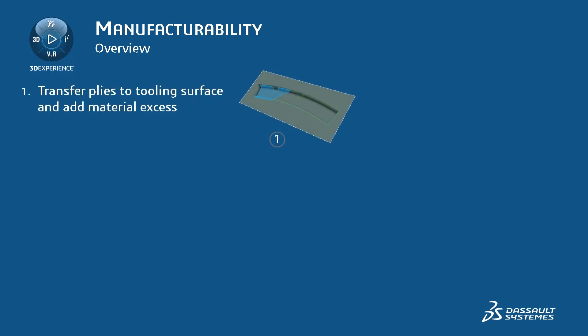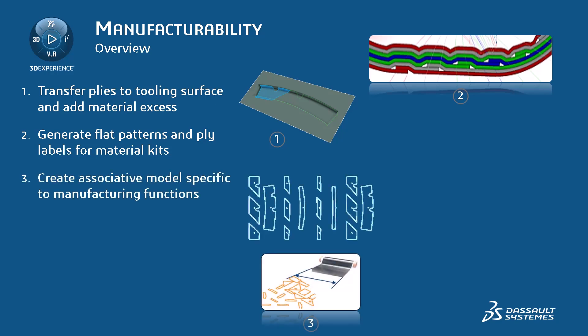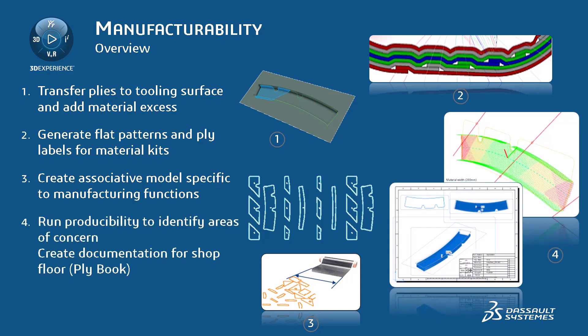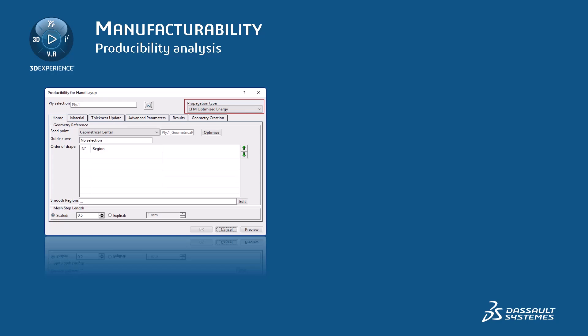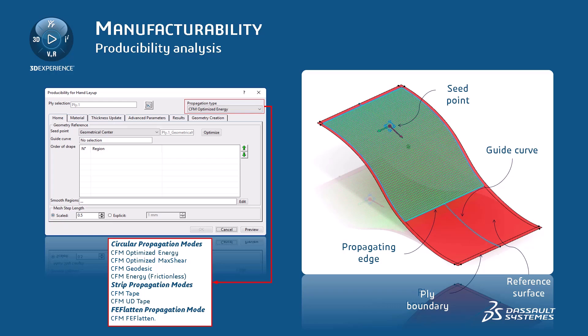In the manufacturing process, it is important to create an associative model specific to manufacturing functions, transfer plies to the tooling surface, and add material excess. To help the operator place the plies on the mold, a document called PlyBook can be created — a manufacturing document based on a drawing that provides work instructions to shop floor operators. Finally, it is also essential to run a producibility analysis to identify areas of concern. It simulates the fiber behavior of a ply to detect manufacturability problems using the hand layup method. When the material roll width is lesser than the ply width, the plies are cut into cut pieces based on simulation results using the splice plies from Producibility command. The staggering and overlap parameters play an important role while splicing the plies.